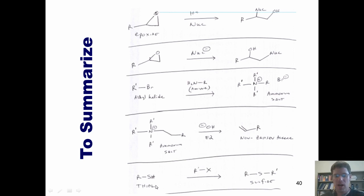In a separate reaction, I can treat a thiol with an alkyl halide to generate a sulfide. And that summarizes all of our reactions from Chapter 10.